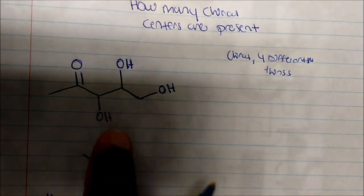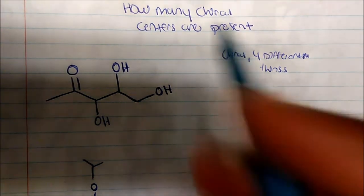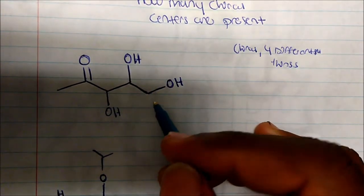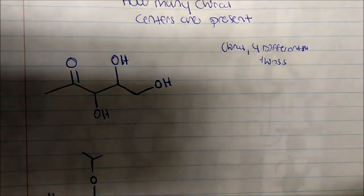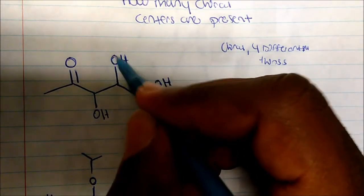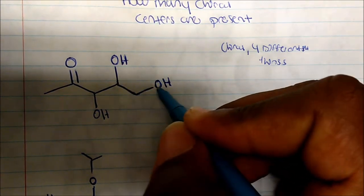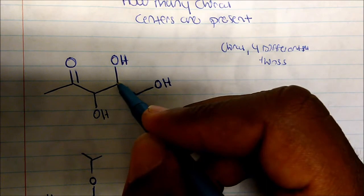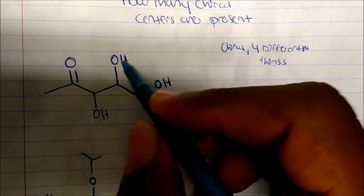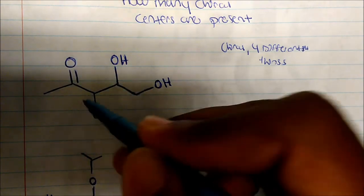Looking at this molecule, how many chiral centers are present? This carbon has two hydrogens bonded to it, so that's two of the same thing — not chiral. This carbon has an OH, a CH2OH group bonded to it, and a hydrogen.